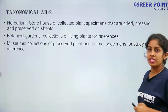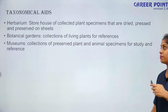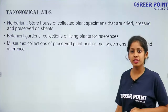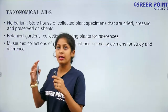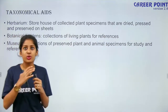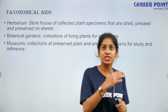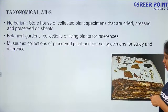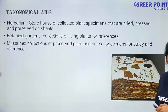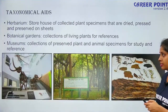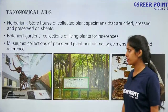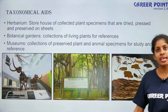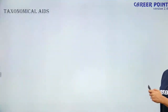Museums are a collection of preserved plant and animal specimens for study and reference. All of us would have been to museums — you would have seen skulls and bones of ancient animals. Even now some museums have the skeleton of dinosaurs, like something from Jurassic Park.